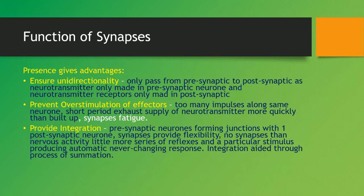Synapses give a couple of advantages. Firstly, they ensure unidirectionality, meaning the impulse will only pass from the pre-synaptic to the post-synaptic neuron, as the neurotransmitter is only made in the pre-synaptic neuron and the neurotransmitter receptors are only found in the post-synaptic. They also prevent overstimulation of effectors, as too many impulses along the same neuron in a short period will exhaust the supply of neurotransmitter more quickly than it can be built up, and synapses will fatigue.